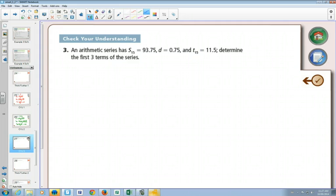An arithmetic series has a sum S15 equal to 93.75, a common difference of 0.75, and we know that term 15 is 11.5. What are the first three sequences of the series?